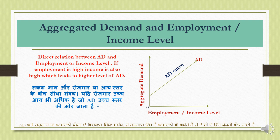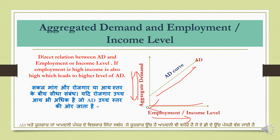The other concept is aggregate demand and the employment or income level. I say employment and income together because both are related — when people get employment, they earn income. There is a direct, positive relationship between aggregate demand and income or employment level. This upward curve clearly shows that when income increases, aggregate demand also increases.